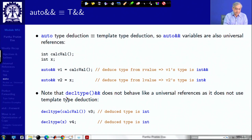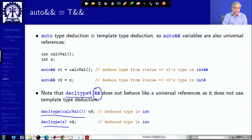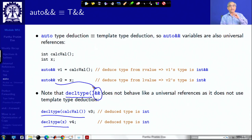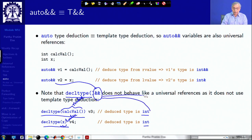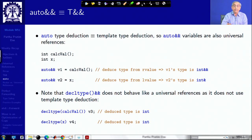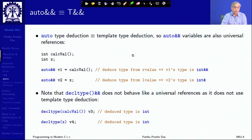If we try to do something equivalent using decltype, we see that even if I put two ampersands after decltype, it will not behave like a universal reference. Because decltype always extracts the actual type devoid of references — it gets the actual type. So whether it is an R value or L value parameter, the type deduced by decltype will be just int. Therefore if I use two ampersands after this, it will always become an R value reference, not a universal reference. This is the key behavior important to understand for universal references.